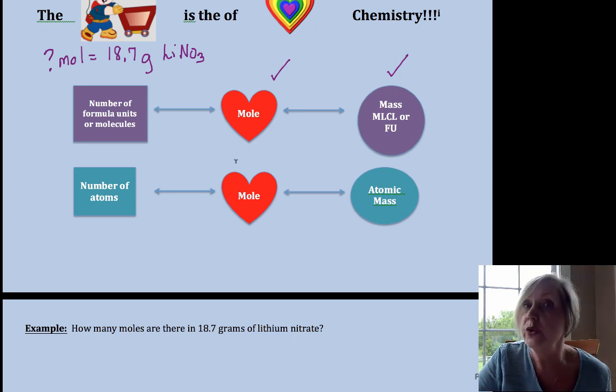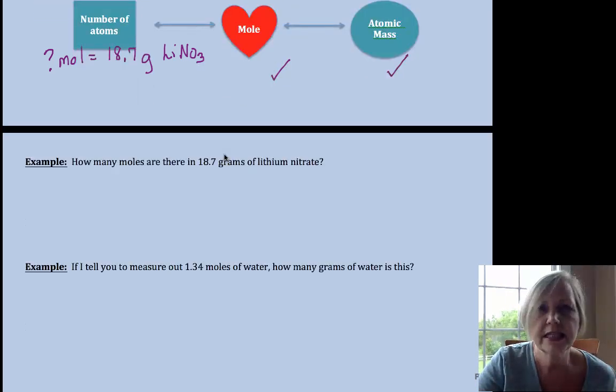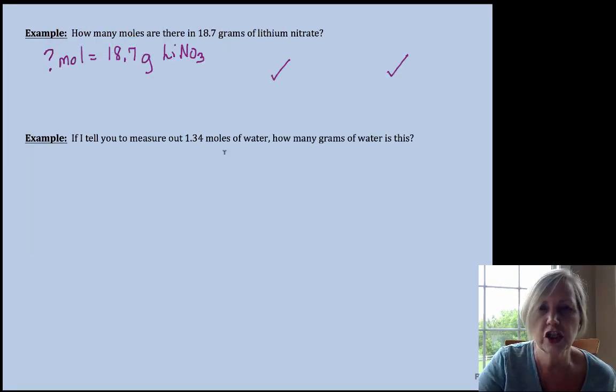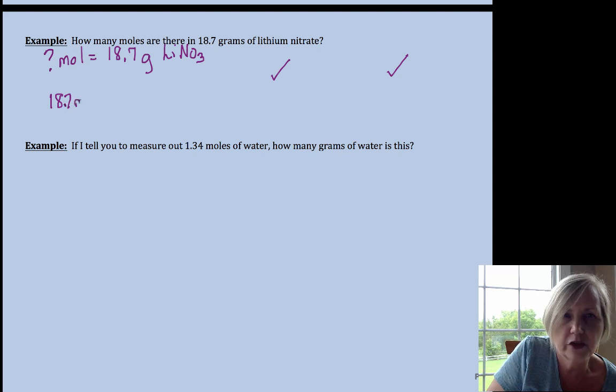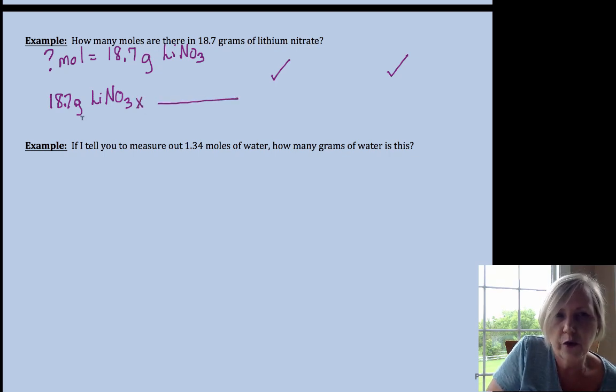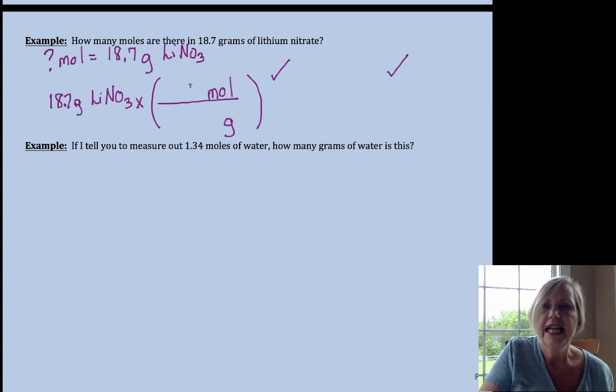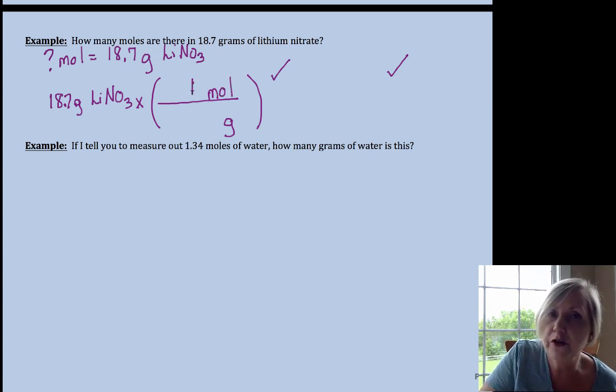And we can do that in one step, so this is a one-step calculation using molar mass. So I'm going to start with my given, 18.7 grams of lithium nitrate, and I'm going to multiply it by my conversion factor. So if I have grams in the numerator, I want grams to cancel in the denominator and I want moles.